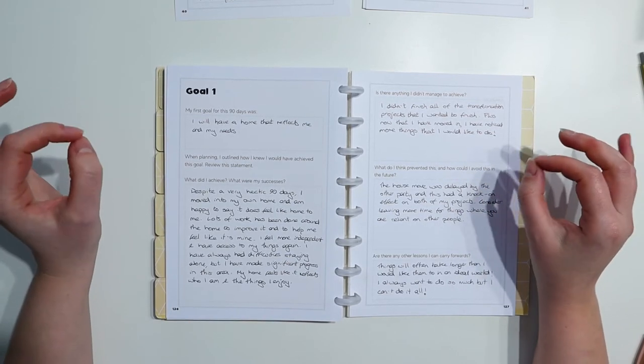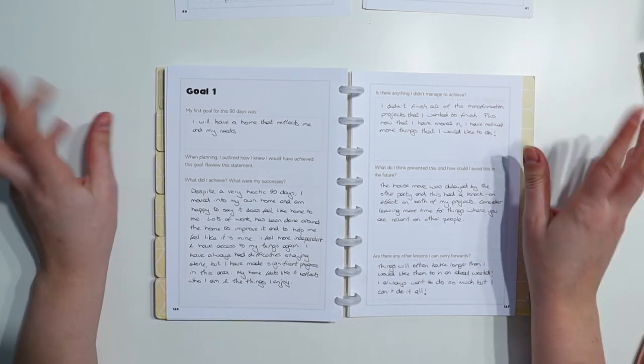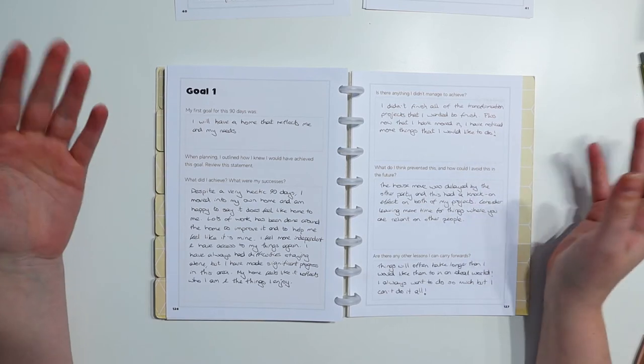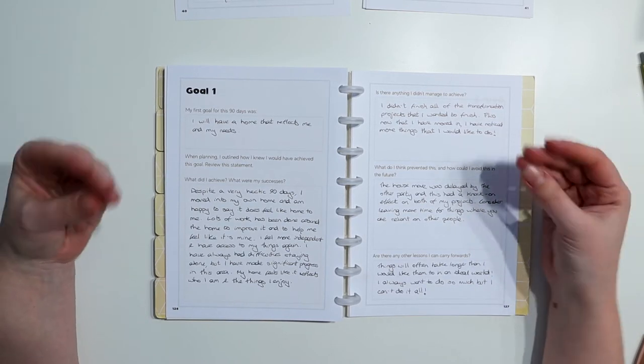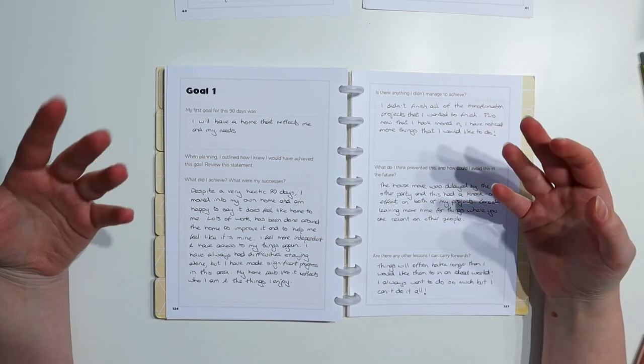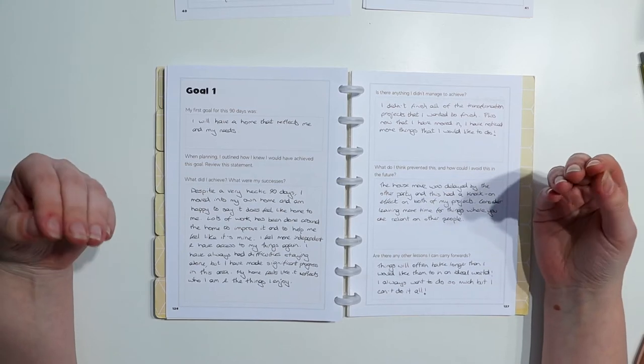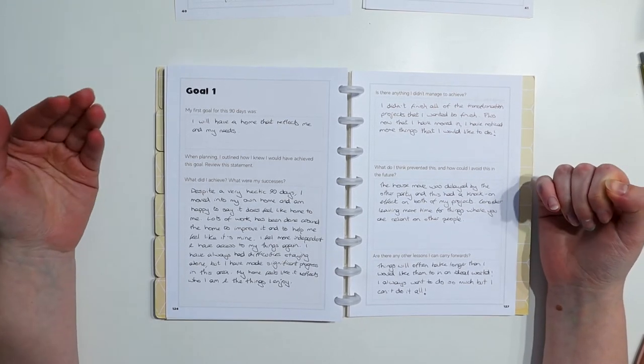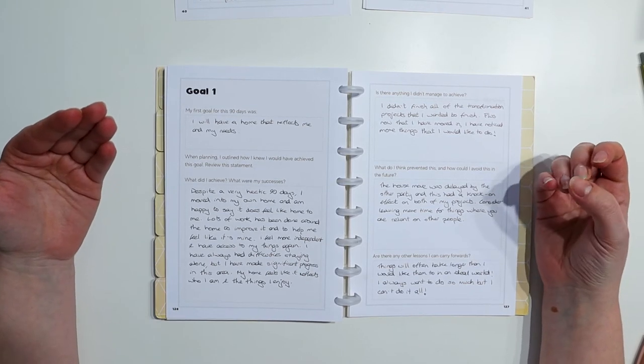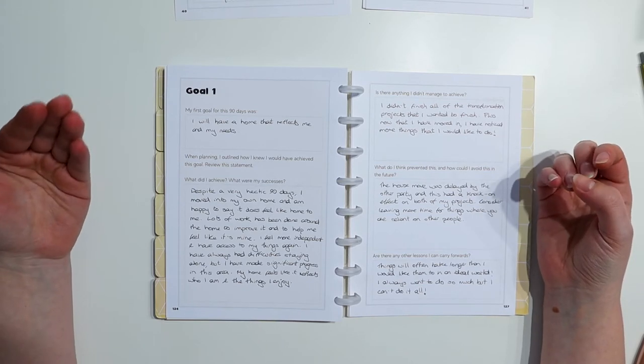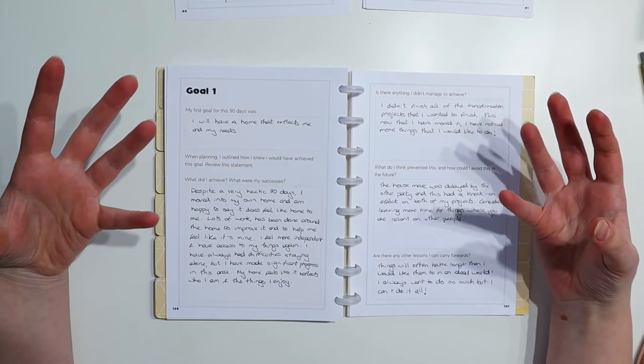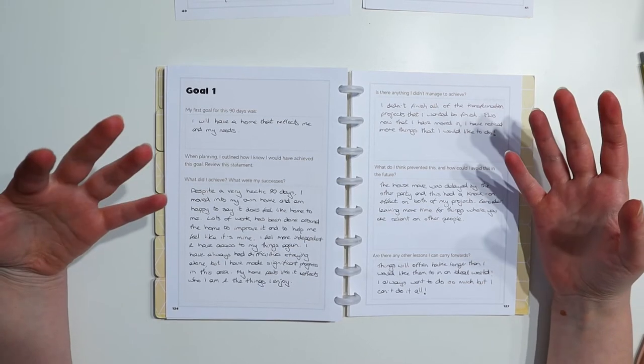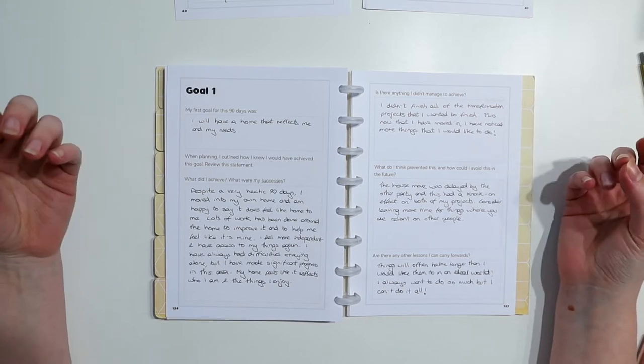So to give a bit of background, my stuff had been in storage for about nine months. I'd been living temporarily with my mum and I was itching to get that sense of independence again. And yeah, all the things that come with that. So I have my things back. I've been able to work through the process of unpacking things and making things feel like my own, setting up spaces tailored for how I need them and things like that. It was very hectic because I also had surgery, major surgery during this 90 day period.